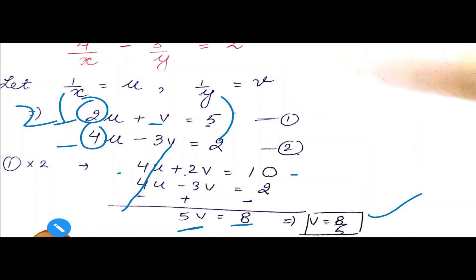We have u equals 17 by 10, and since u equals 1 by x, we get x equals 10 by 17. We have v equals 8 by 5, and since v equals 1 by y, we get 1 by y equals 8 by 5, so y equals 5 by 8. Therefore the solution is x equals 10 by 17 and y equals 5 by 8.